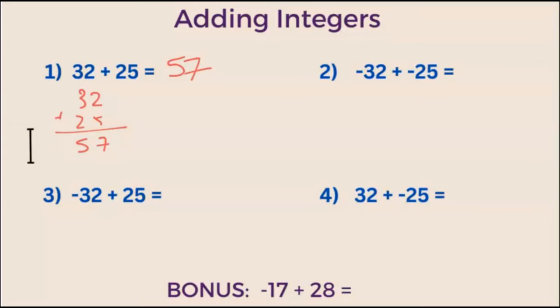32 plus 25, which we know from our first example is 57, and we put a negative sign in front. So negative 32 plus negative 25 is negative 57.